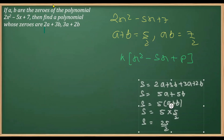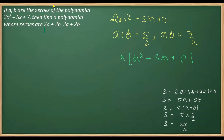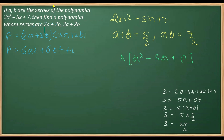For the product P, we multiply (2a+3b)(3a+2b). Expanding: 2a×3a = 6a², 2a×2b = 4ab, 3b×3a = 9ab, and 3b×2b = 6b². So the product is 6a² + 13ab + 6b².